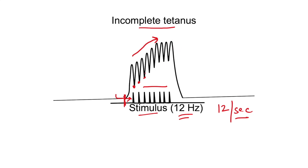When the second stimulus is given sufficiently early, the calcium remaining from the previous stimulus adds up with the calcium newly released. Because of this increased calcium in the sarcoplasm, we get an increase in the strength of contraction, since strength of contraction is directly proportional to the amount of calcium present.